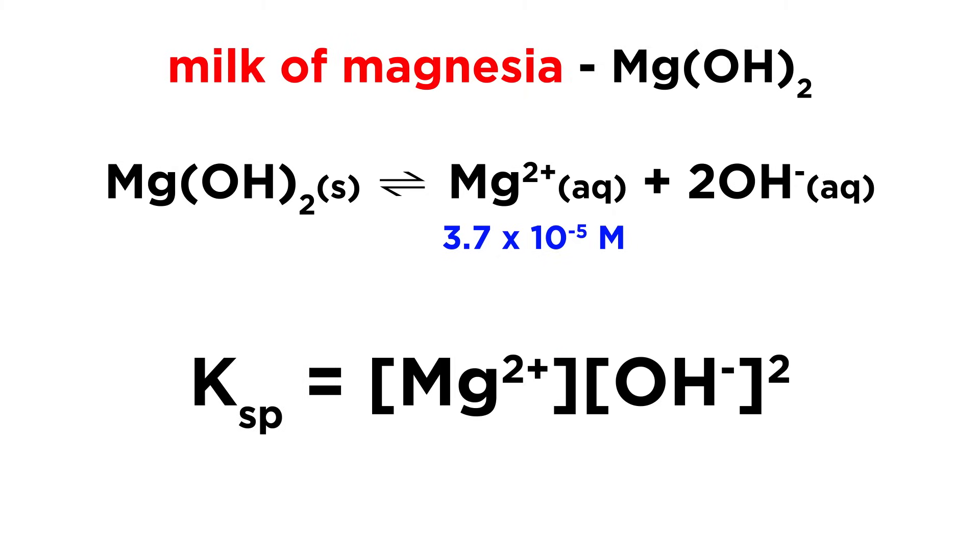First let's write the Ksp expression for this substance, which we derived earlier. Notice that hydroxide concentration is squared, due to the coefficient in the equilibrium. Now if this is the concentration of the magnesium ion, then the hydroxide ion concentration must be precisely double, since there are two hydroxide ions for every magnesium ion in this substance.